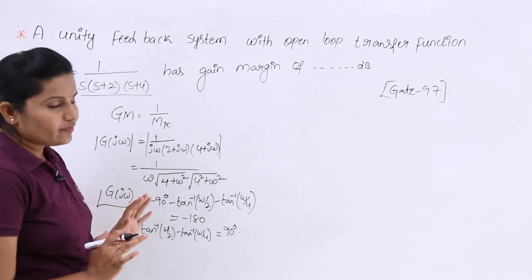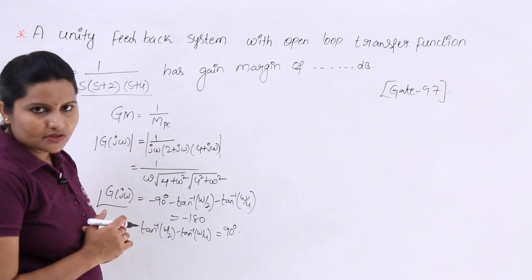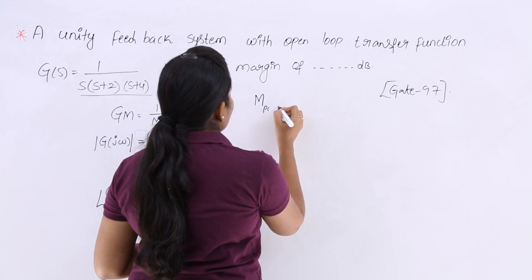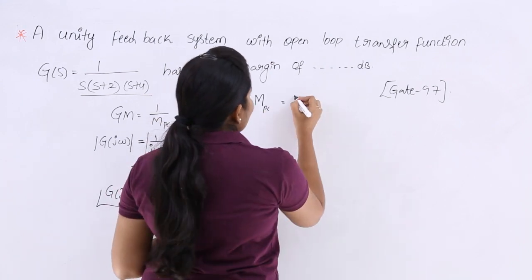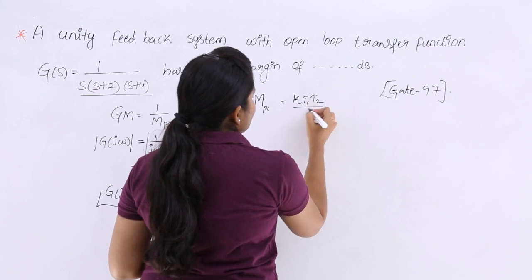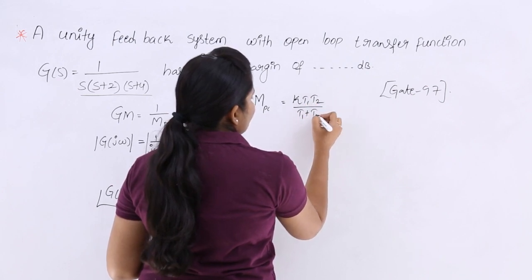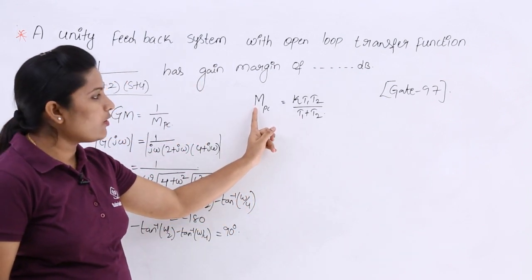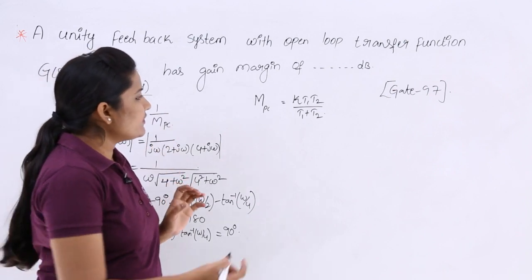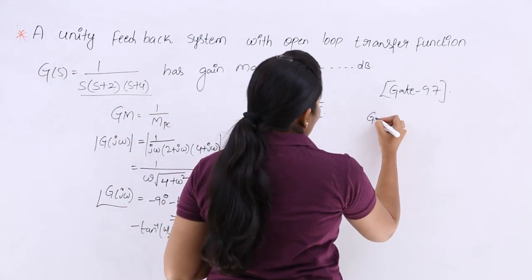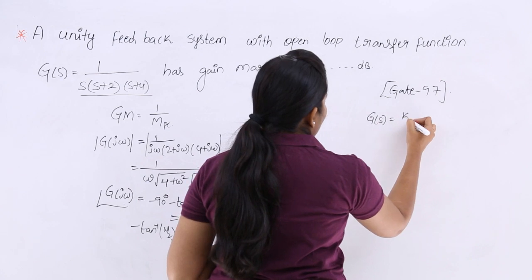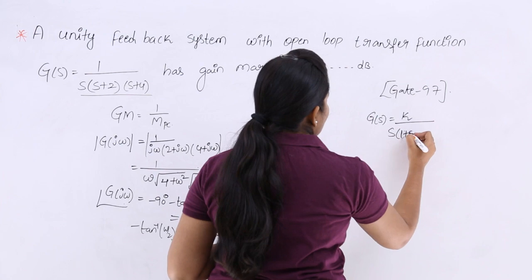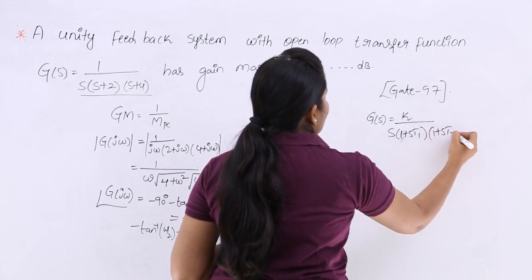Instead, here is the shortcut: the magnitude at the phase crossover frequency equals K·T1·T2 divided by (T1 + T2). This formula applies when the transfer function is in the form K divided by s(1 + sT1)(1 + sT2).